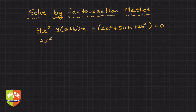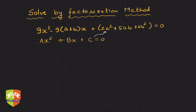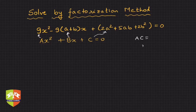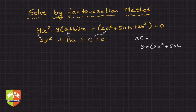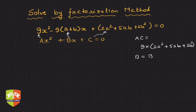This equation is of the form ax² + bx + c = 0, where c is the term (2a² + 5ab + 2b²), b is (9a + b), and a is 9. So a×c is 9 × (2a² + 5ab + 2b²). We need to split the b term into b1 + b2 such that b1 × b2 equals a×c.